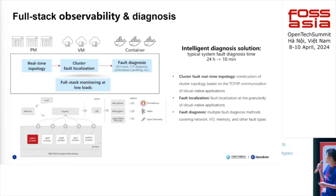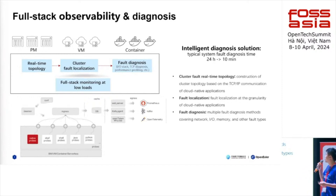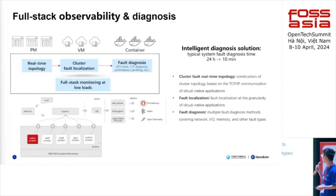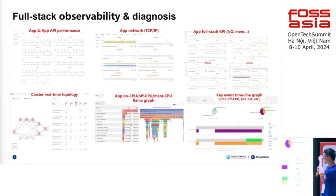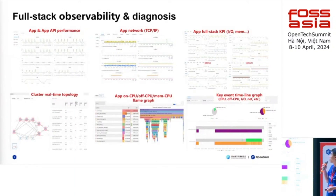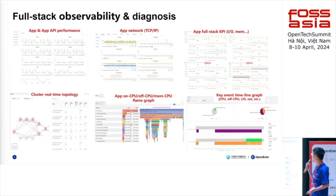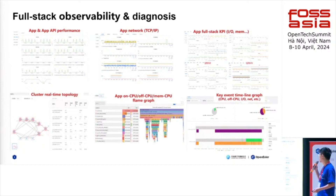Finally, you can also do fault diagnosis. We have covered IO, memory, and even performance — you can do online performance profiling. Here are some charts made by Galagolfer. You can see it covers most of the useful data for daily maintenance work, like application API performance and TCP/IP data. It can also draw flame graphs of the CPU and memory, and do online profiling based on on-CPU or off-CPU analysis.